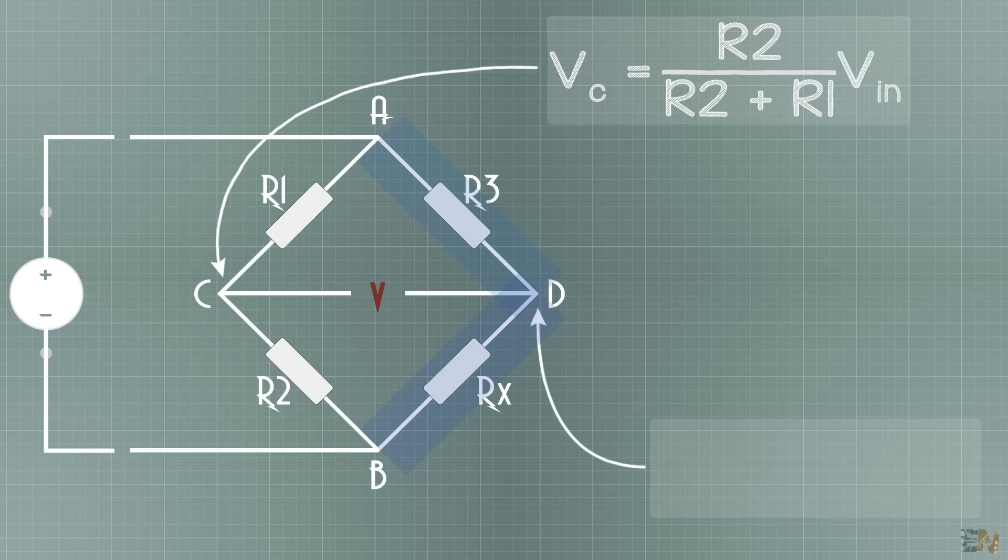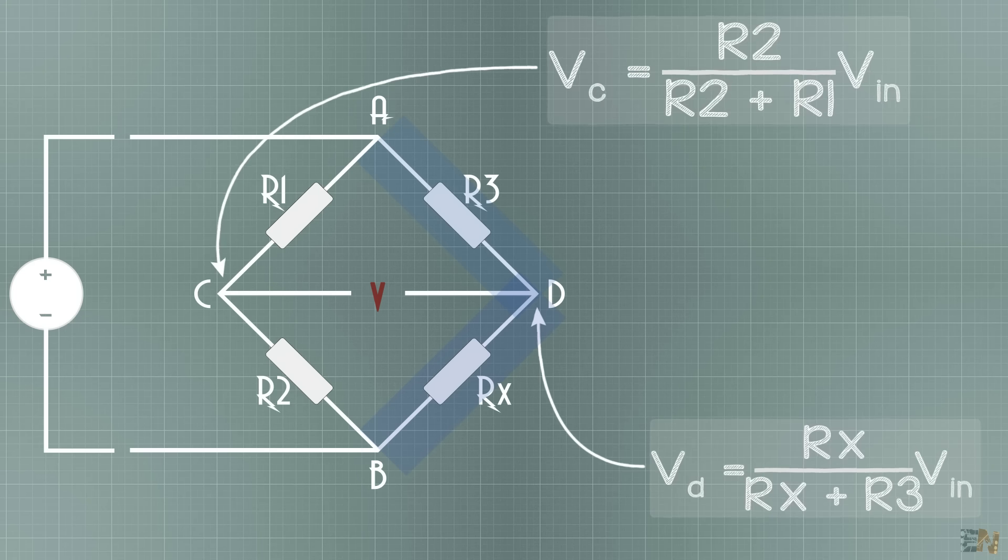And the voltage on point D is Rx divided by the sum of Rx and R3 and multiplied by the same input voltage. So the voltage drop between C and D is the voltage on C minus the voltage on D.